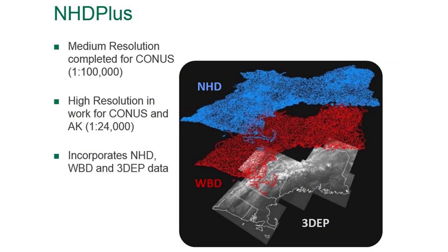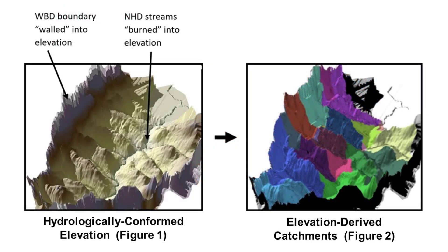The Environmental Protection Agency and USGS Water Programs developed NHD Plus to provide flow volume and velocity estimates along the NHD stream network to support dilution models for pollutants in the water. To provide flow volume and velocity, the National Hydrography Dataset, the Watershed Boundary Dataset, and elevation from the 3DEP program were integrated to create the NHD Plus. To produce NHD Plus, the elevation data needs to be modified to reflect the geographic locations of features in the current NHD and WBD datasets. The elevation data are modified in the vicinity of the flow paths of NHD streams and the ridgelines of WBD hydrologic unit boundaries to make the three datasets consistent.